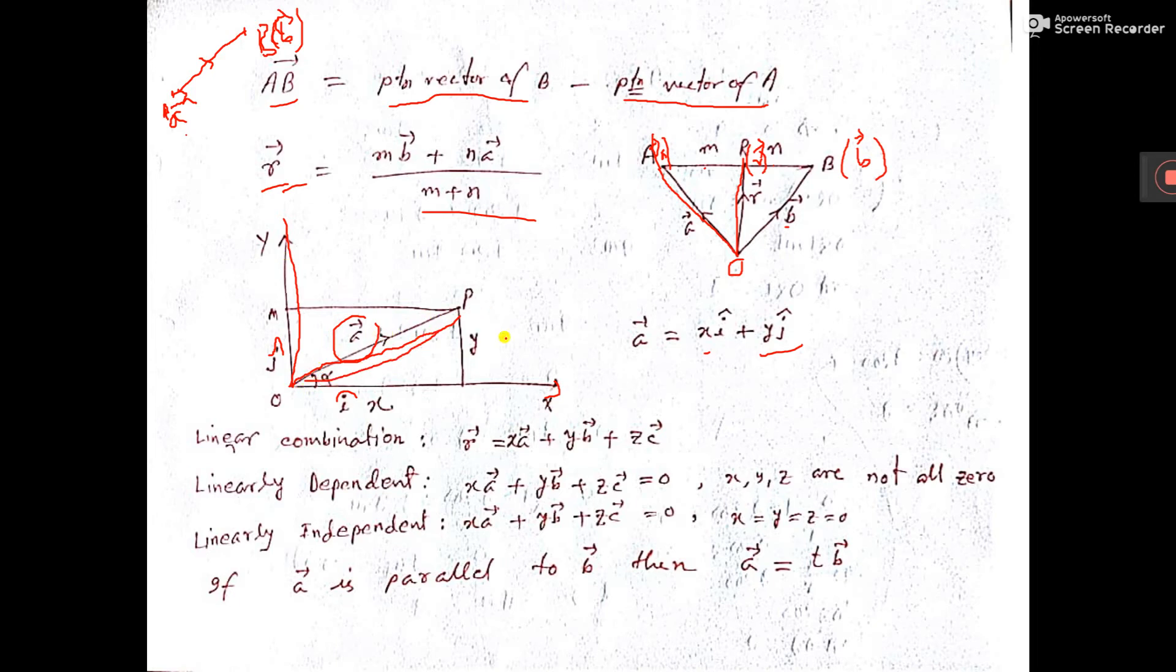So, A vector we can write x i plus y j. x i, that is this vector, and y j, that is O M vector, where i and j are the unit vectors along x-axis and y-axis.